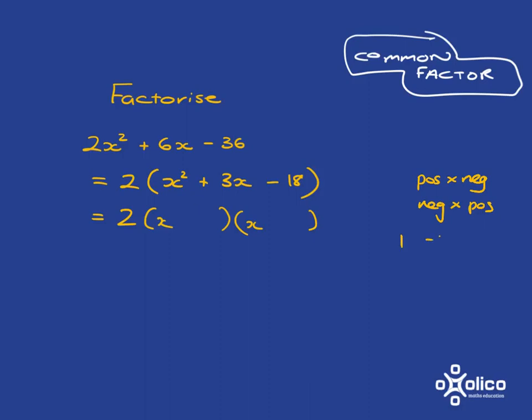We start with 1. It'll be 1 times -18 or -1 times 18. Then 2, 2 times -9 or -2 times 9. Then 3, 3 times -6 or -3 times 6. 4 doesn't go into 18. 5 doesn't go into 18. 6 does, but we've already got 6. So now we've done enough.